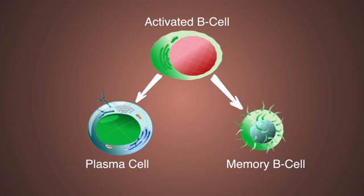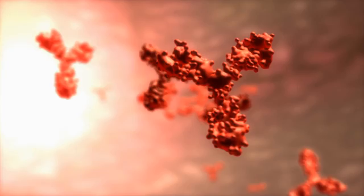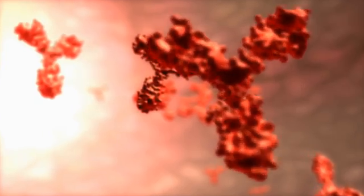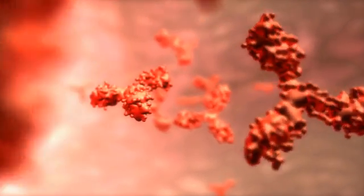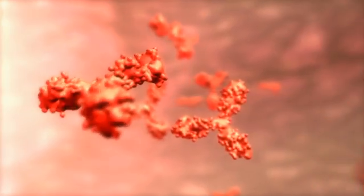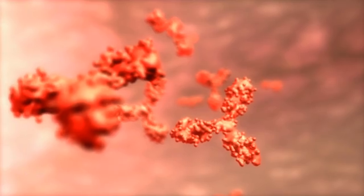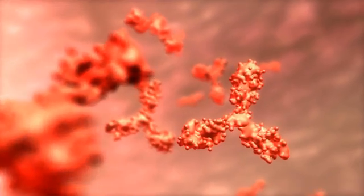Plasma cells are like antibody-producing factories — they secrete a bunch of antibodies. And these antibodies are like the heroes of the immune system. They are specialized proteins designed to recognize and neutralize specific antigens, such as those on the West Nile virus.